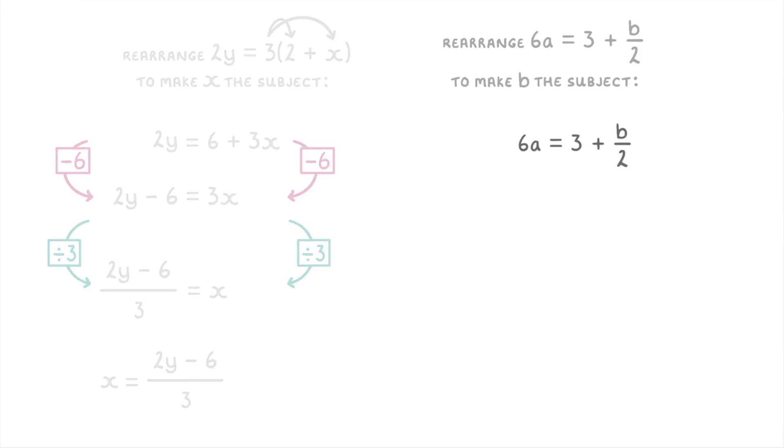For the last question, the first thing we do is subtract 3 from both sides to get 6a minus 3 equals b over 2. Then to get b by itself, you just multiply both sides by 2, and again it'll be the whole 6a minus 3 that you need to multiply by the 2.